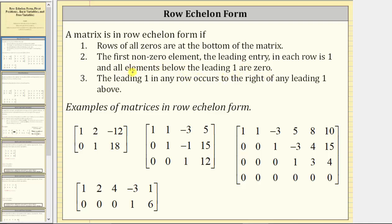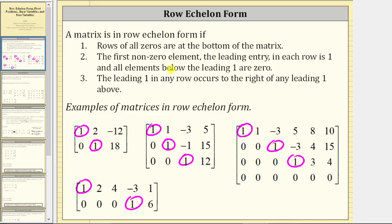To check this, let's circle the first non-zero element, or the leading entry, in each row. We can easily see the first non-zero element in each row is one, and all the elements below the leading one are zero — we have zeros here, here, and here. And finally, condition three: the leading one in any row occurs to the right of any leading one above. Notice how this is also true for each of these matrices.